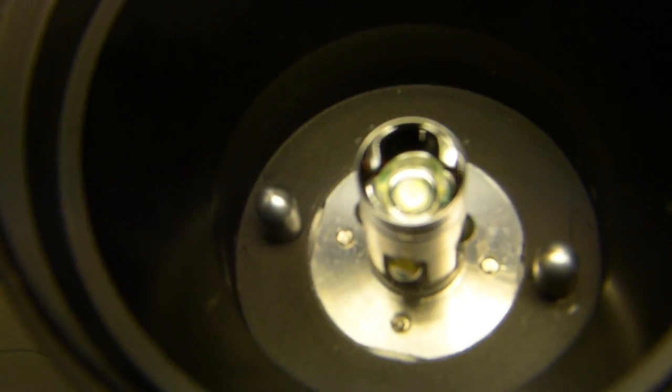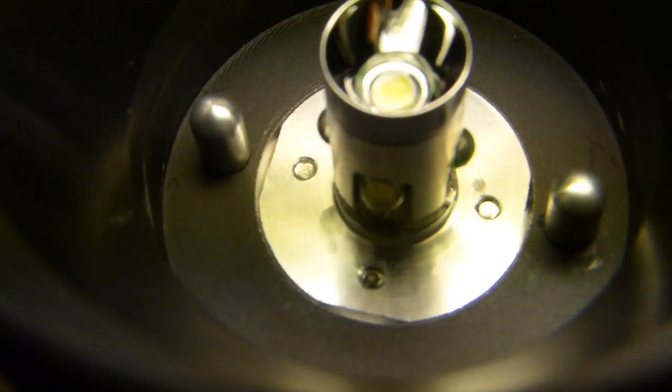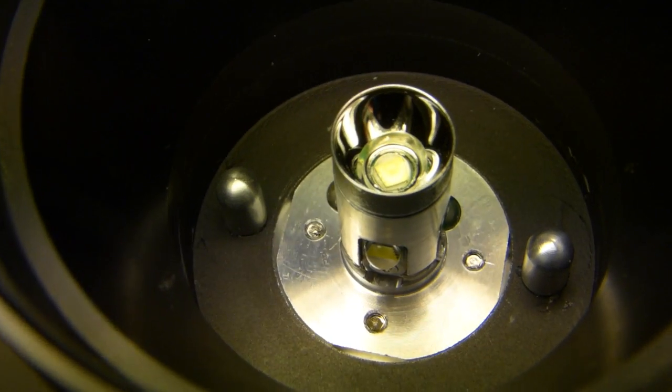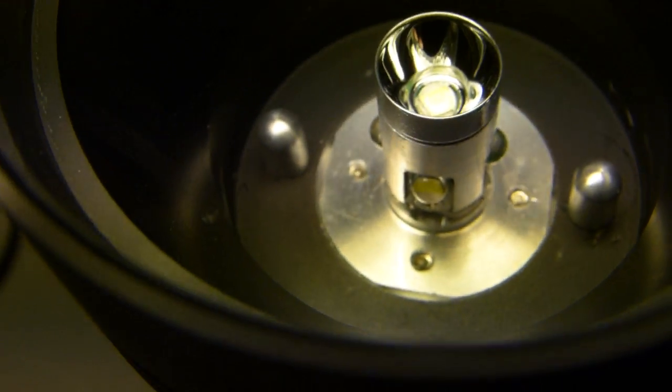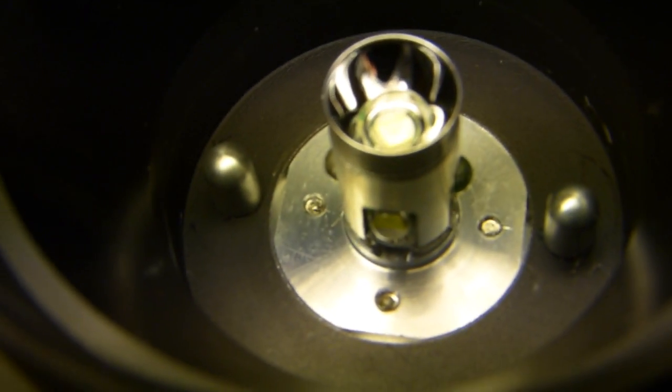So here we have a close-up of what I like to call the emitter stock. I'll try to get the lighting better here and see just how far my camera will cooperate in terms of a macro close-up. There we go.